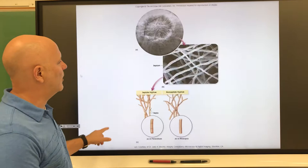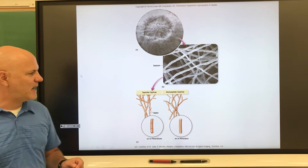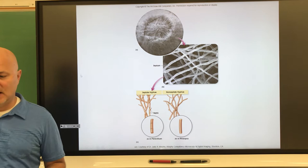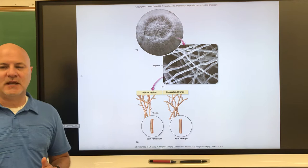Hyphae are found with molds — these are long, thread-like cells found in filamentous fungi. There are two types: septated hyphae, which have separations in their filaments (seen on the left), and non-septated hyphae, which have no separations. Some fungi are dimorphic, meaning they can exist either as a yeast cell or in the hyphae form.